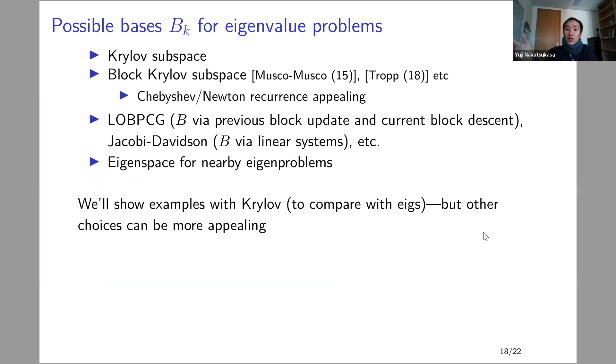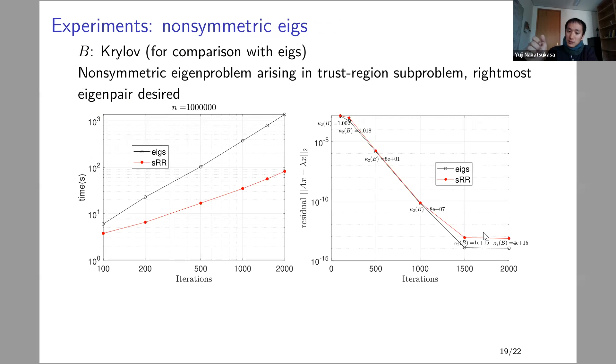There are other equivalent ways of understanding this. For eigenvalue problems, there's no compelling reason to have to stick with a Krylov subspace as being the basis. You can use, for example, Jacobi-Davidson. You can use LOBPCG or whatever. But the point is, once you have a subspace to work in, you can use this sketch Rayleigh-Ritz to speed up the computation.